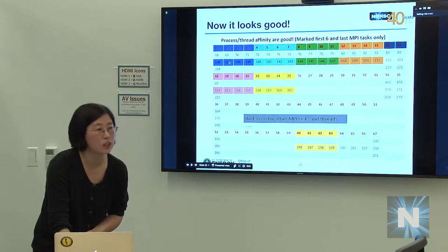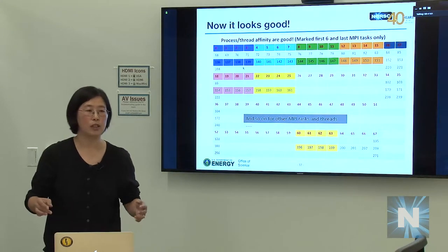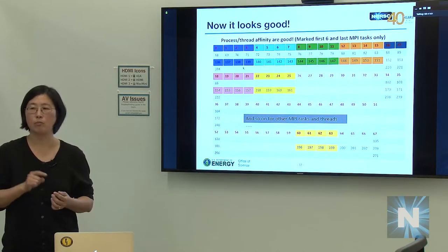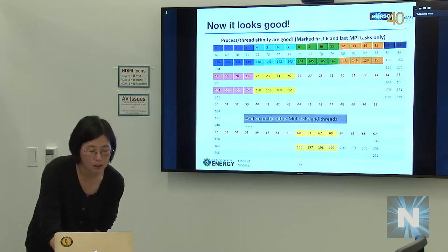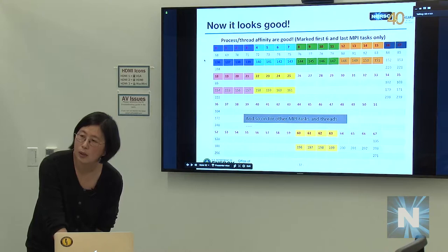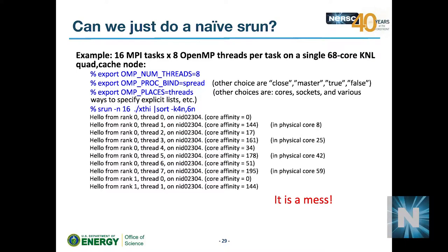OMP_PROC_BIND=true is recommended for cross-compiler consistency — Intel and Cray default to spread, but GNU has historically differed (a bug has been filed and committed but not yet released). OMP_PLACES=threads pins each OpenMP thread to one logical CPU; OMP_PLACES=cores allows threads to float within a core. You can also bind to sockets.